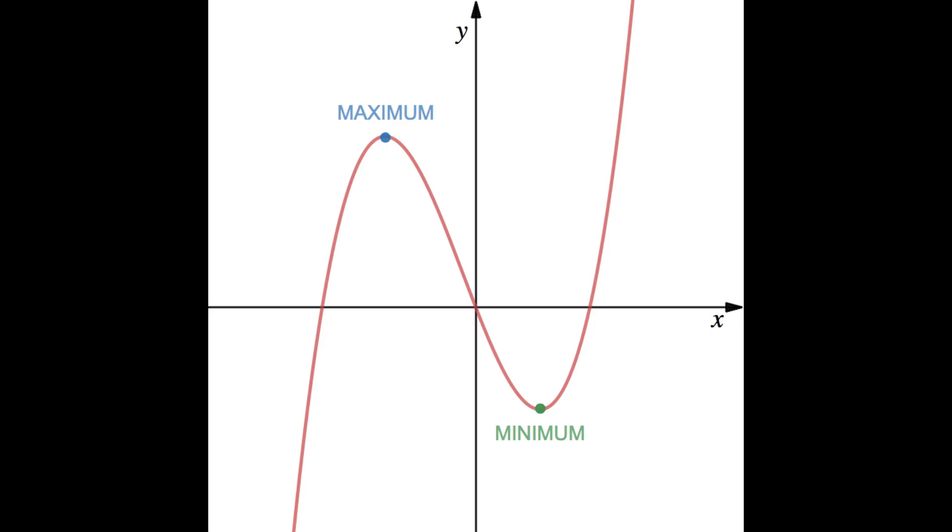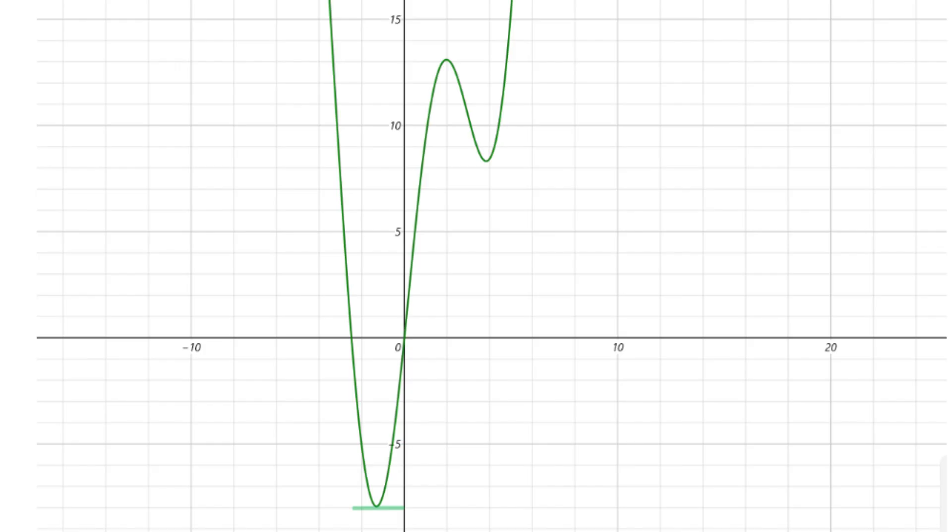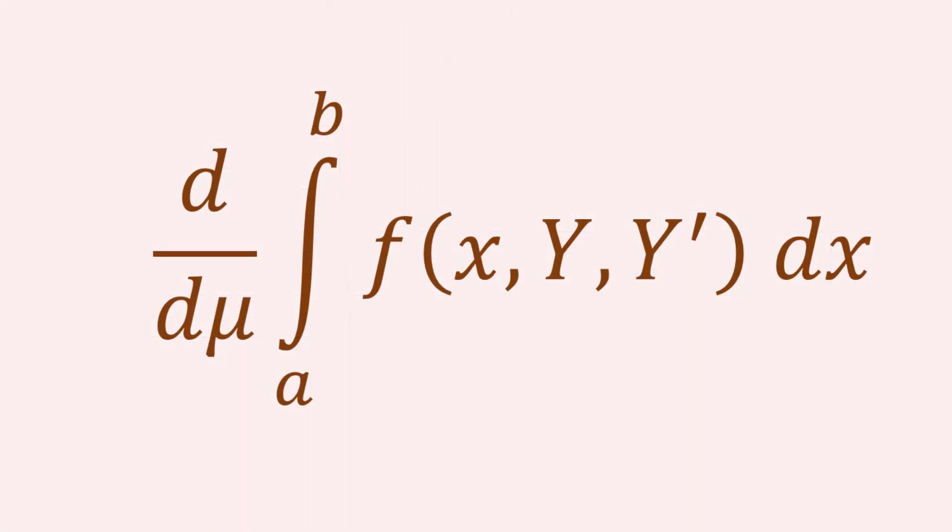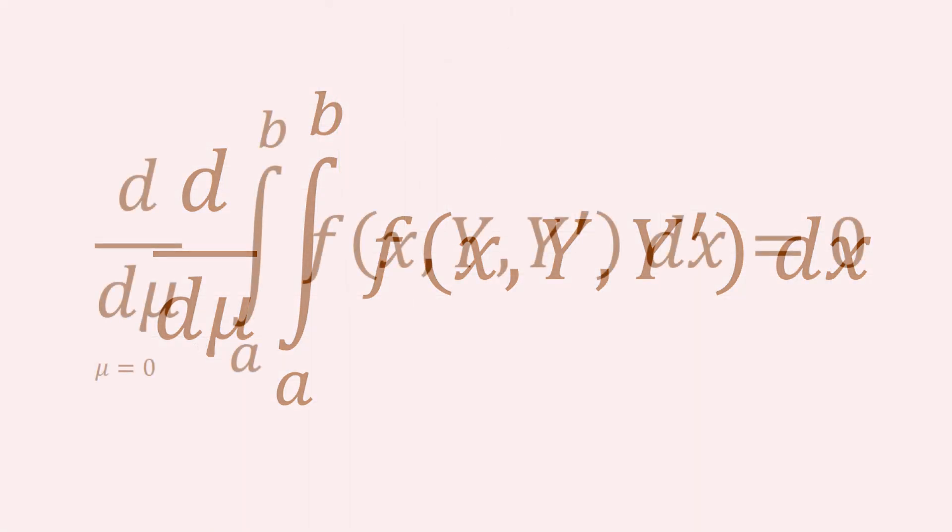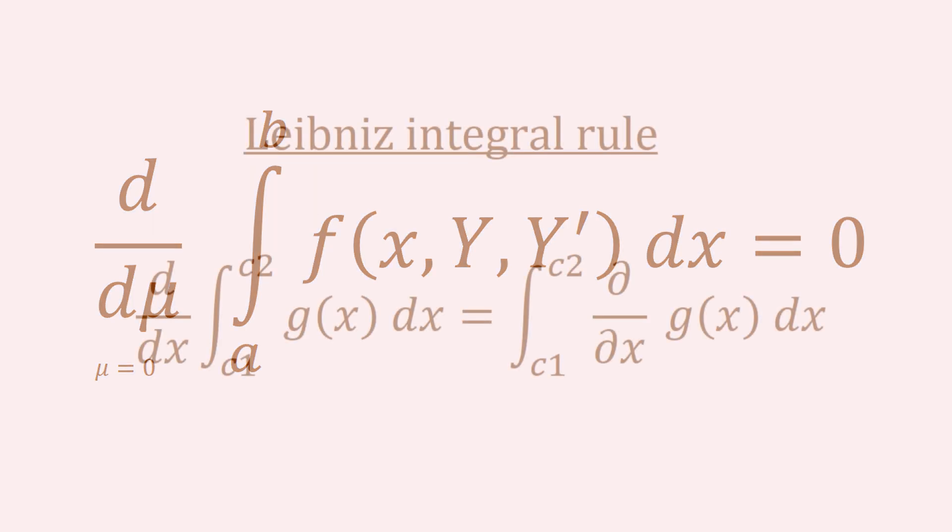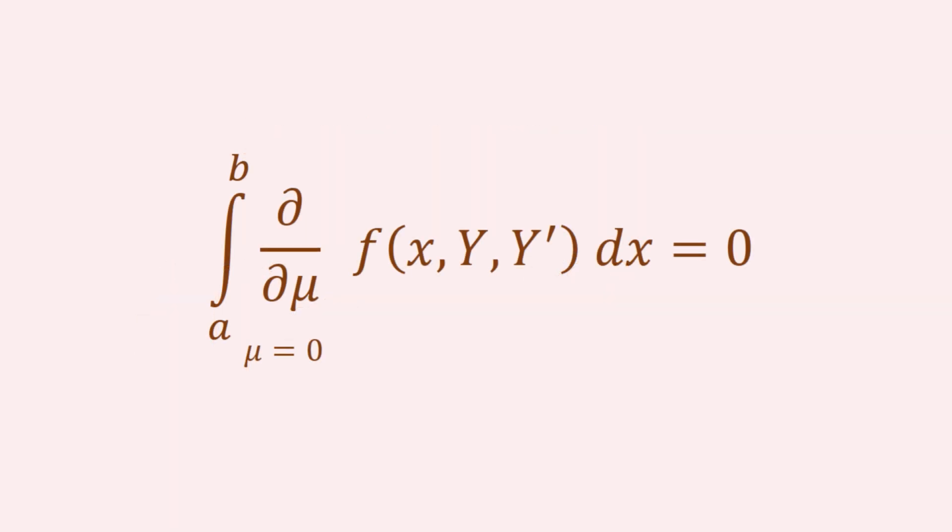We can optimize the output in the same way we optimize single variable functions. We know that the derivative of the output with respect to the parameter is zero when the parameter's value is zero. So, we can set up a relationship as follows. Here, we are taking the derivative of a function's integral. In this instance, we can use the Leibniz rule. We can rewrite this expression according to the Leibniz rule as follows.